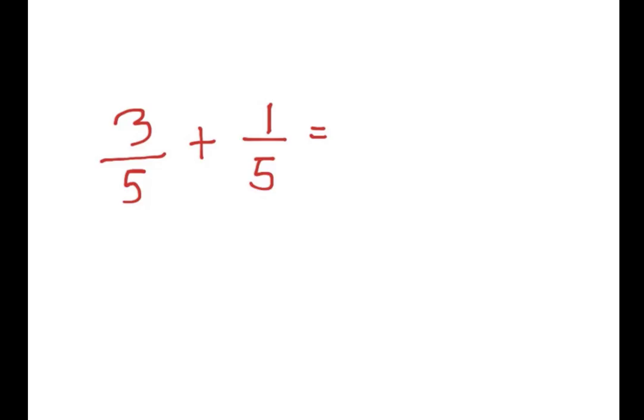So, you can see this example has the same denominator, and whenever you have the same denominator, all you need to do is add the numerators, so 3 plus 1 is 4 over 5, and that's it.